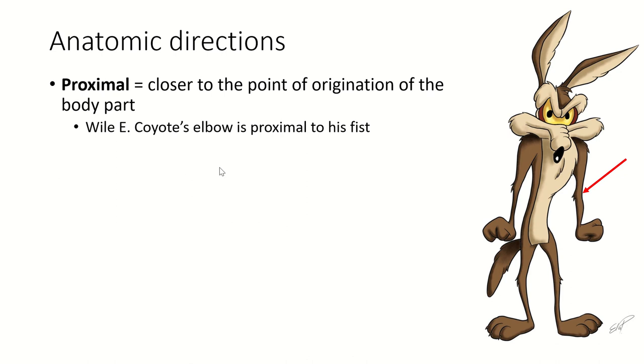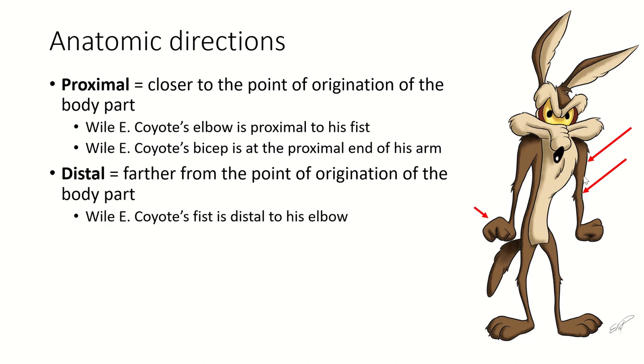One other pair of terms that sometimes people have trouble with is proximal and distal. Proximal refers to closer to the point of origin of the body part. So the elbow is proximal to the fist, meaning it's closer to the point of origin, which is here. The arm originates here and goes down. The legs originate here and go down. The bicep is at the proximal end of the arm. The elbow, however, is distal to the bicep and the fist is distal to the elbow. So proximal means closer to the point of origin. Distal means farther away.